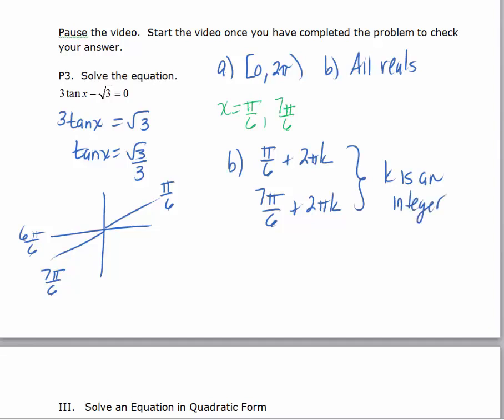But where tangent is positive in the first and third quadrants, this general solution can actually be written more efficiently. If you notice you've got one solution at π over 6, you get another solution at half a rotation. If you add π to π over 6, you get 7π over 6, and if you added another π, you would get a solution that's coterminal with π over 6.